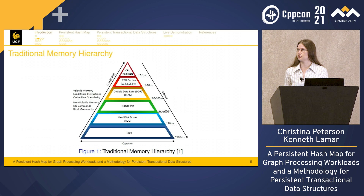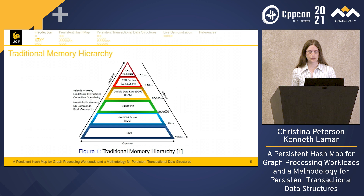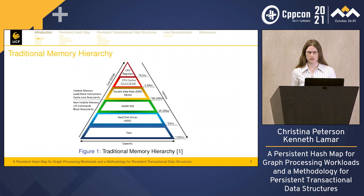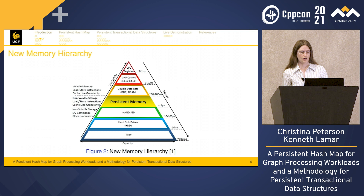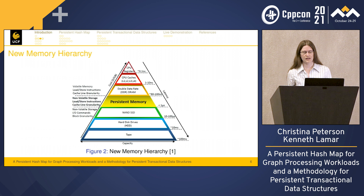Here's the traditional hierarchy. We have storage at the bottom tiers that are non-volatile, and then the top tier which is volatile — including DRAM, CPU caches, and CPU registers. Cost goes up per gigabyte as we go up the tier, and latency decreases as we go down. The new memory hierarchy adds persistent memory right in the middle — it's non-volatile, has capacity close to NAND SSD, but latencies much closer to DRAM.